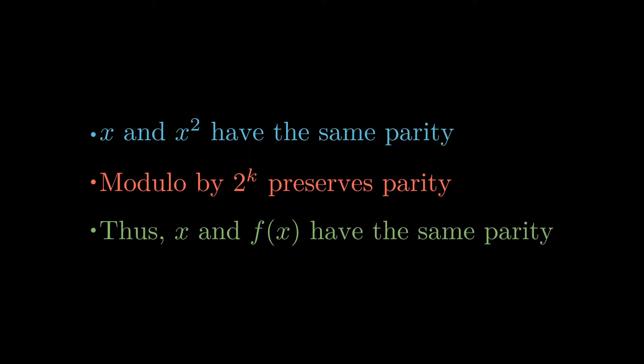Therefore, if a number ends up at 1 under the application of f, it must be odd, and if it ends up at 0, then it must be even.